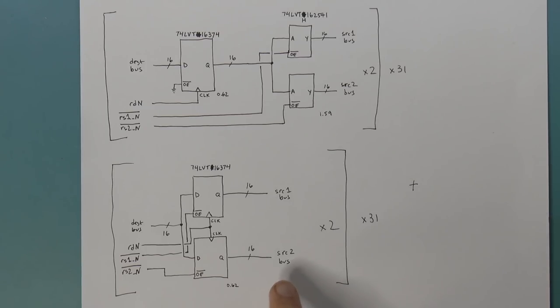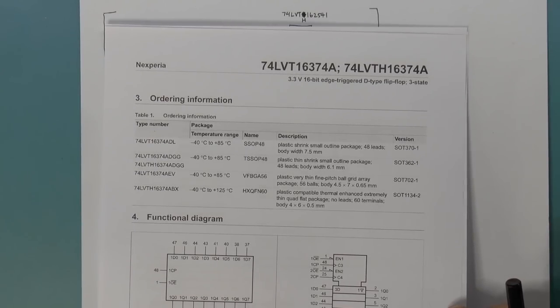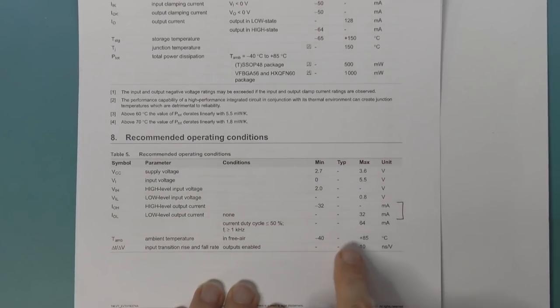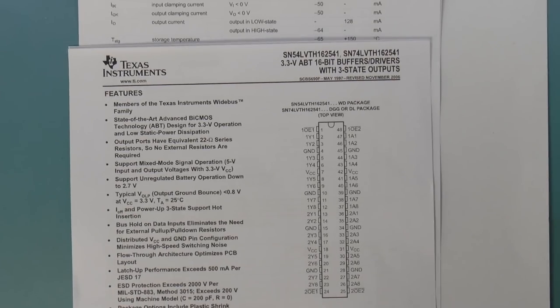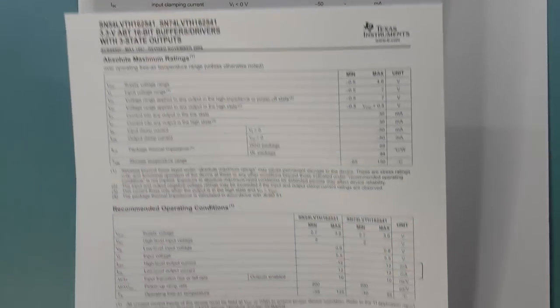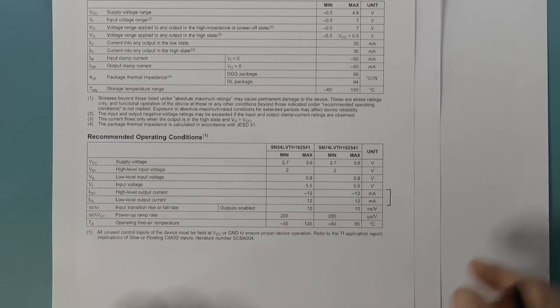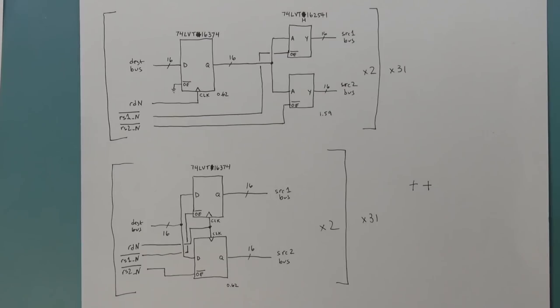If we also look at the drive capability, here's the datasheet for the 16374. And if we take a look at the output current, we can see that these registers can source 32 milliamps. On the other hand, if we look at the 16251 datasheet, these buffers can only source 12 milliamps. So in my opinion, that's another plus for this architecture.